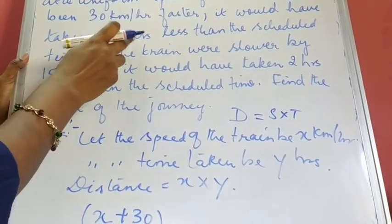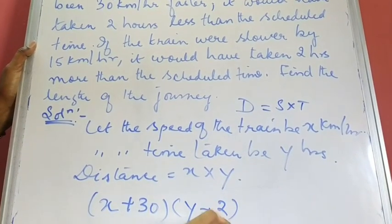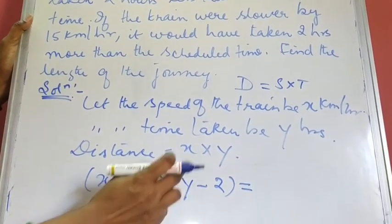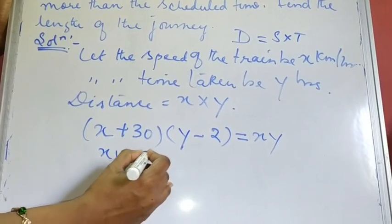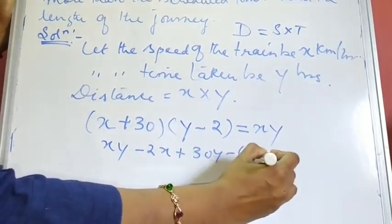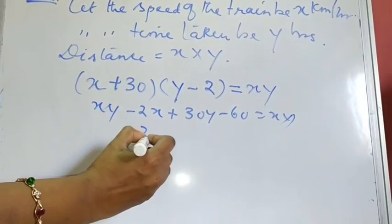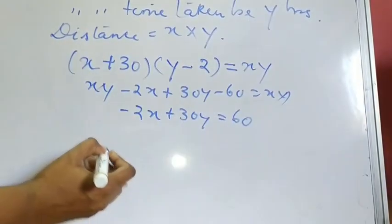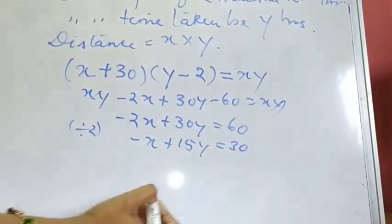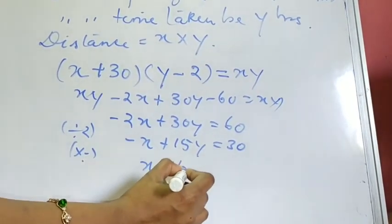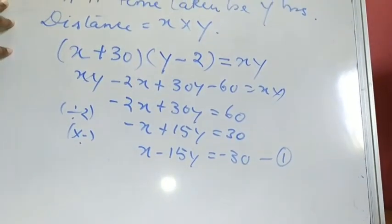Expanding (x + 30)(y − 2) = xy gives xy − 2x + 30y − 60 = xy. The xy terms cancel, leaving −2x + 30y = 60. Dividing by 2 and rearranging gives x − 15y = −30, which is our first equation.